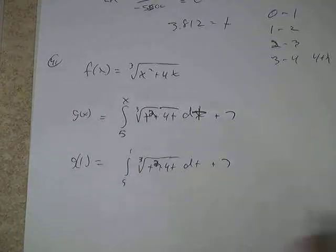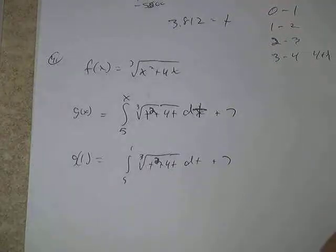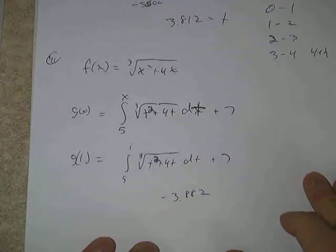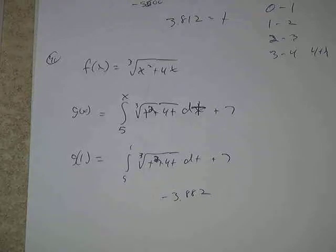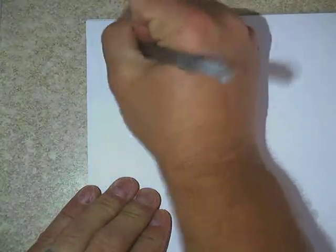Putting 5 in the lower limit gives zero, plus 7, satisfying the initial condition. This is still a valid antiderivative even though it involves an integral. To find g(1), plug 1 in — this is a calculator problem. Typing it in correctly gives letter A, approximately negative 3.882.